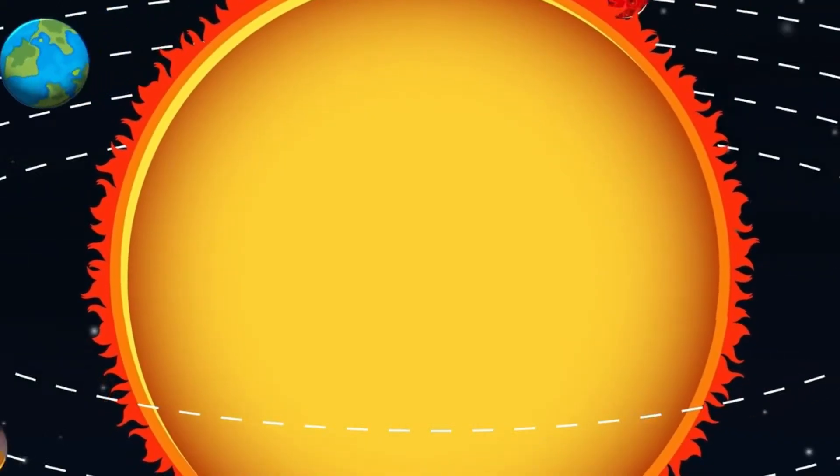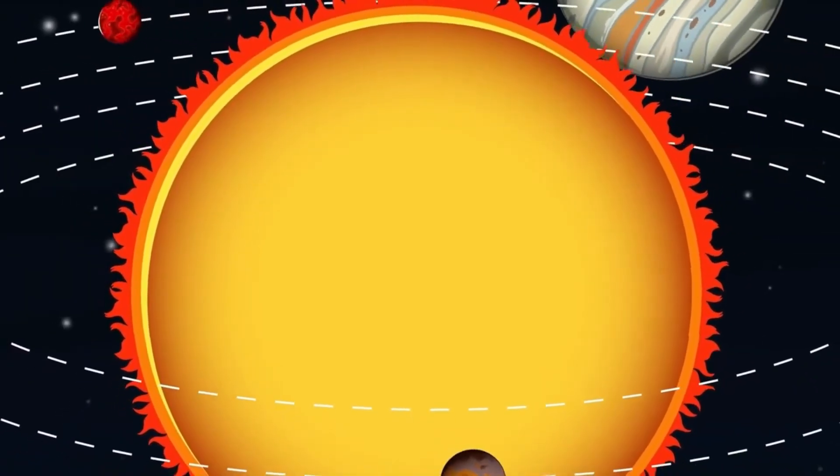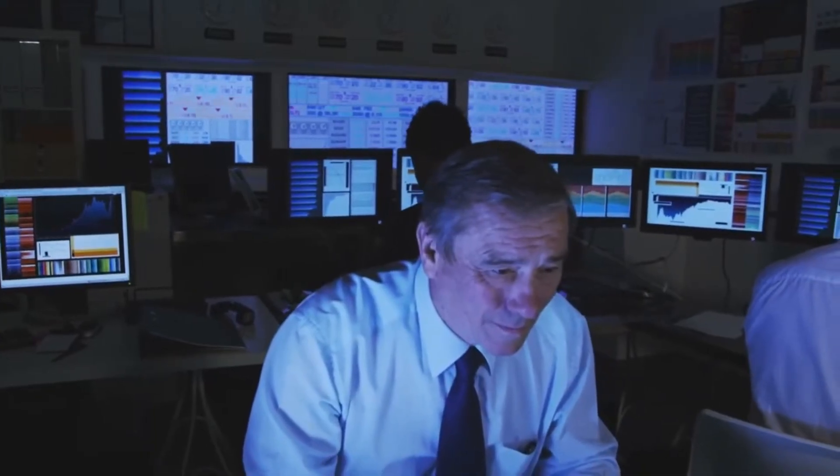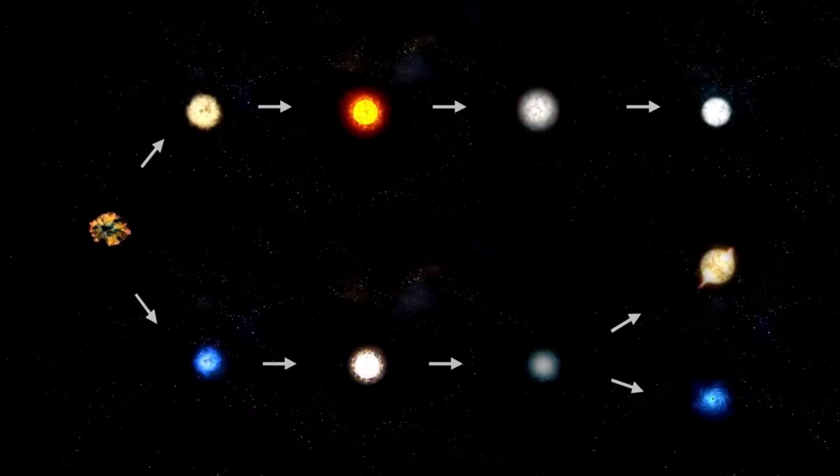If Betelgeuse were to go supernova, the event would undoubtedly be one of the most awe-inspiring spectacles ever observed from Earth. The explosion would be so bright that it might appear as a second sun in our sky, dominating nights for weeks, perhaps even months. Such an occurrence, though breathtaking, poses no threat to our planet due to its considerable distance.